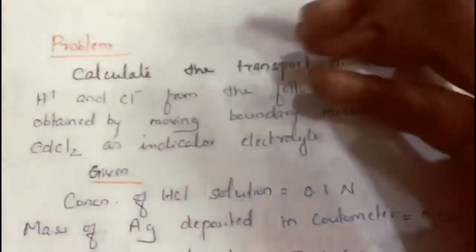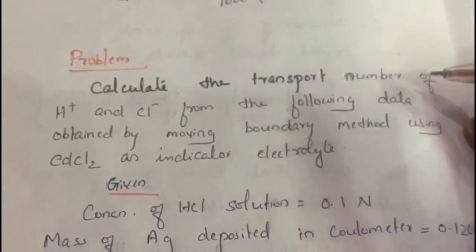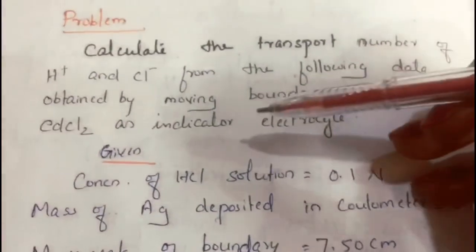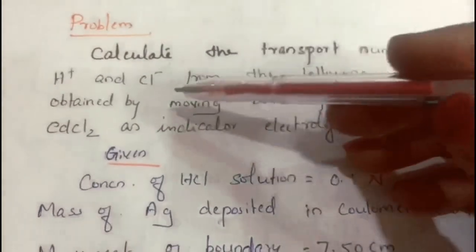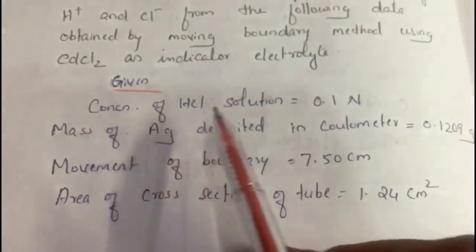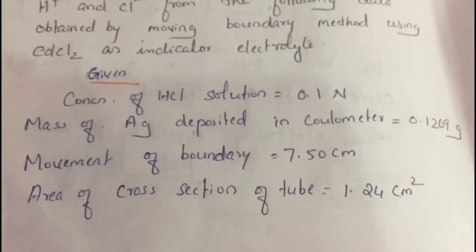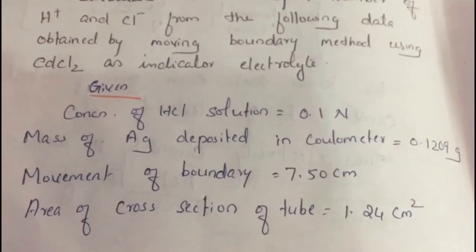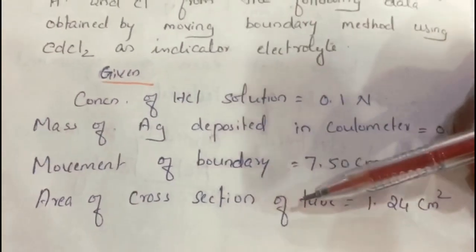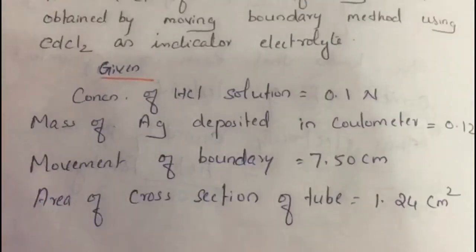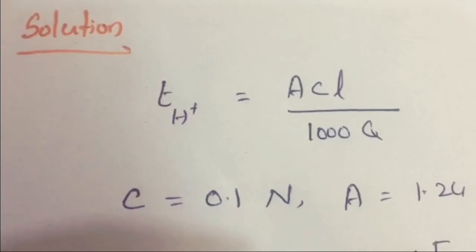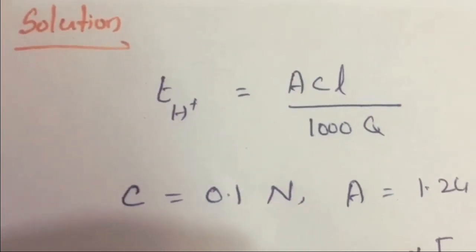Now let us discuss a problem. Calculate the transport number of H⁺ and Cl⁻ from the following data obtained by the moving boundary method using cadmium chloride as indicator electrolyte. Given: concentration of HCl = 0.1 N; mass of silver deposited in the coulometer = 0.1209 g; movement of boundary L = 7.5 cm; area of cross section A = 1.27 cm². Please pause the video and try to solve using the equation.